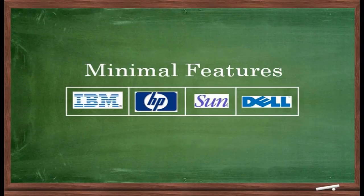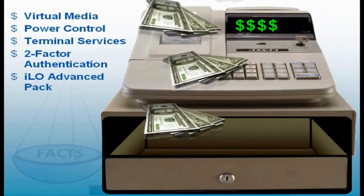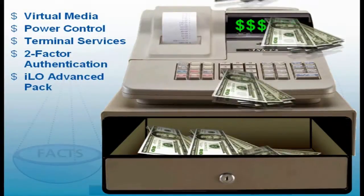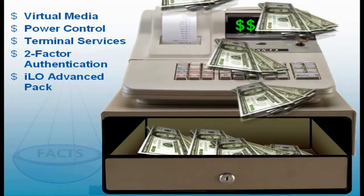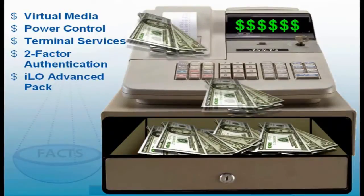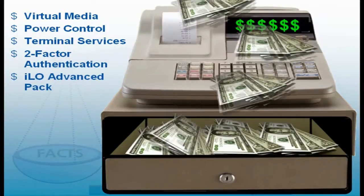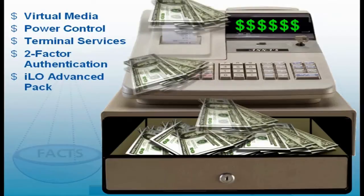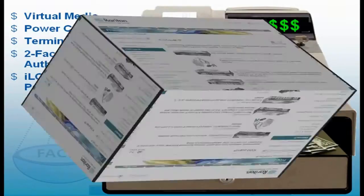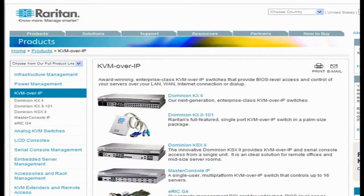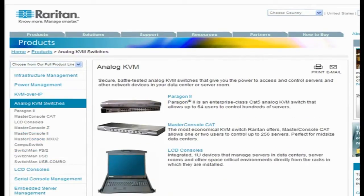Most server companies provide just minimal features with the basic embedded service processor. Want things like virtual media or power control? You'll need to buy additional software licenses, sometimes priced per additional feature. That can quickly add up to hundreds of dollars more per server. Also, the cost to manage hundreds of ESPs can be quite expensive. A Raritan KVM access solution averages between $250 to $500 per server with a large number of additional features and capabilities included in that price.